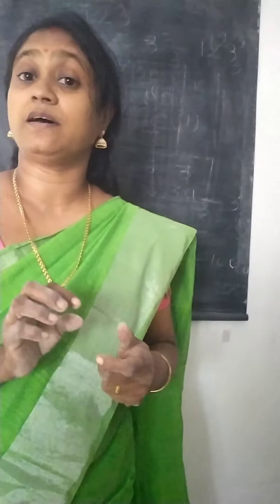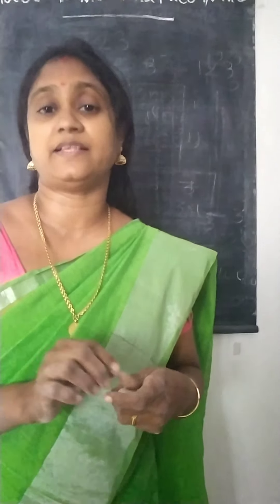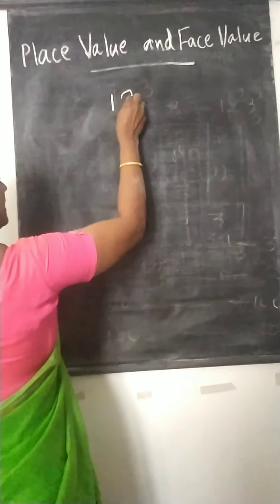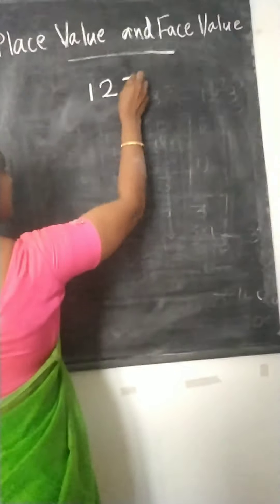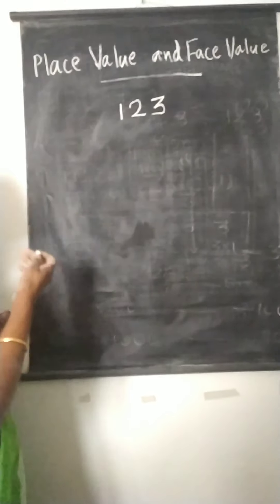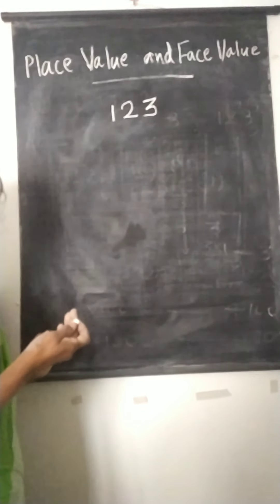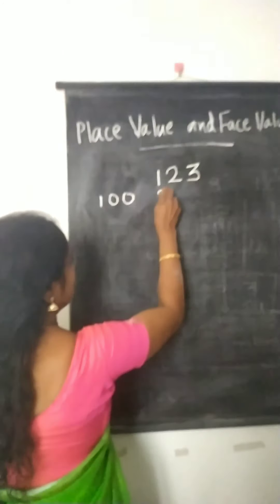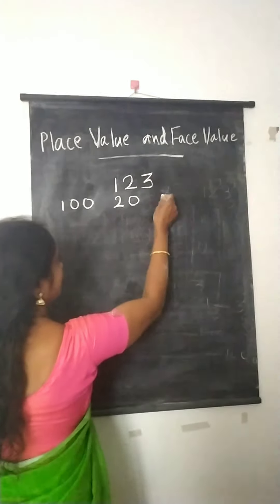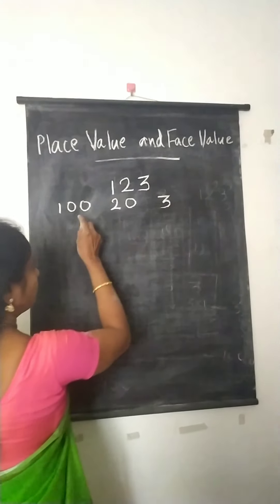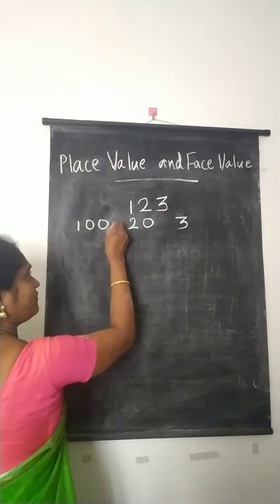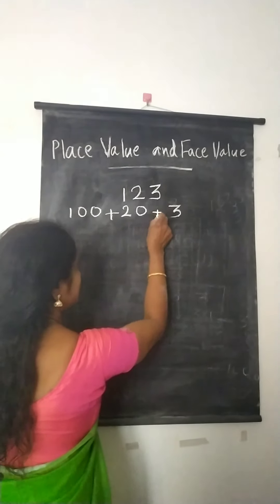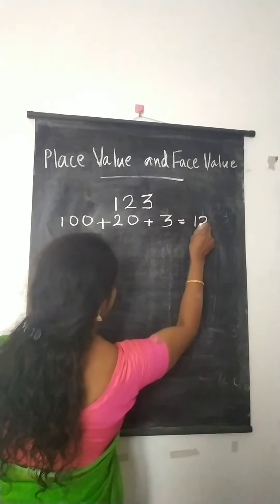Let's understand this with the help of an example. Here is a number: 1, 2, 3. So how can we read this number? This is 123. When we add these three numbers, we will get the given number.